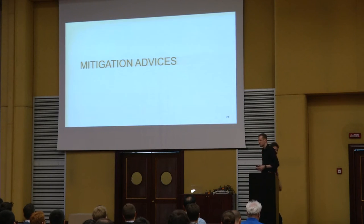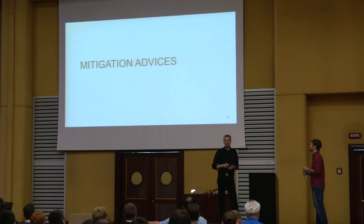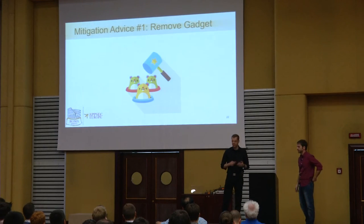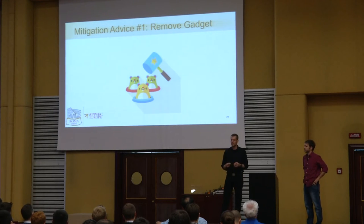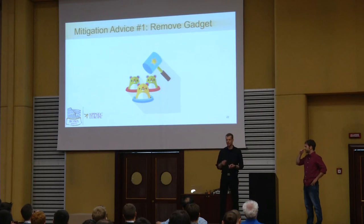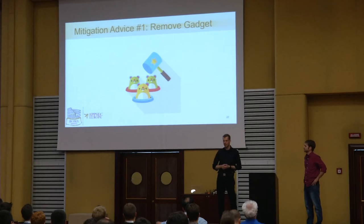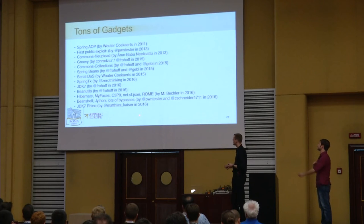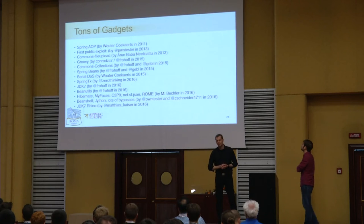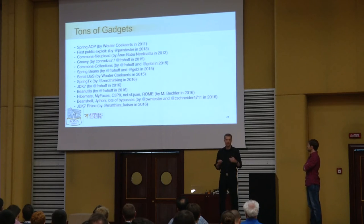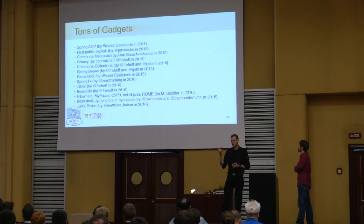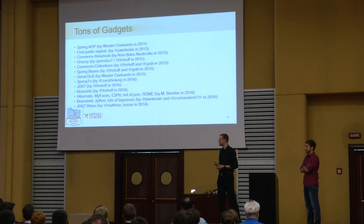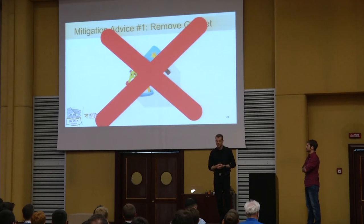Regarding mitigation advices: the first advice was simply to remove the gadget class from the class path, rendering the target server no longer vulnerable. But that's not a good idea because it might break functionality, and there are many gadgets found and still to be found. Also, there are some golden gadgets sitting inside the JRE itself that cannot be removed. Removing gadgets from the gadget space is not a good solution.